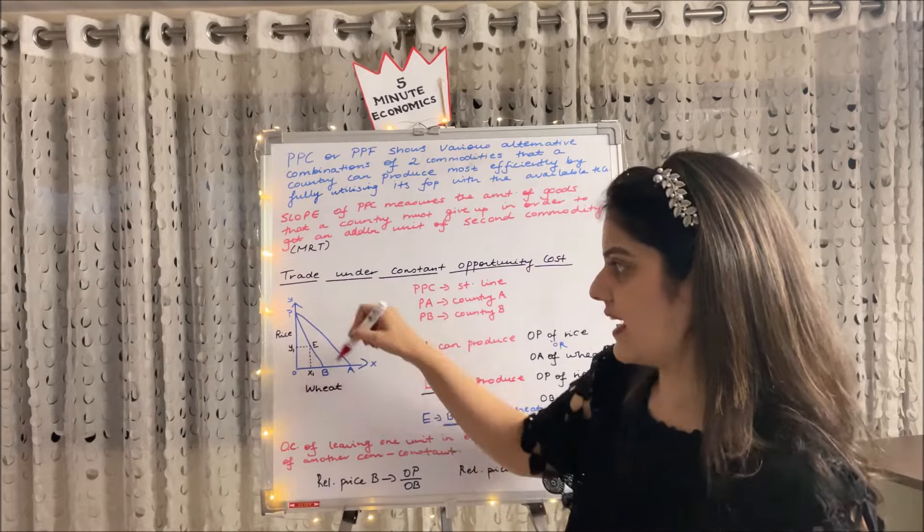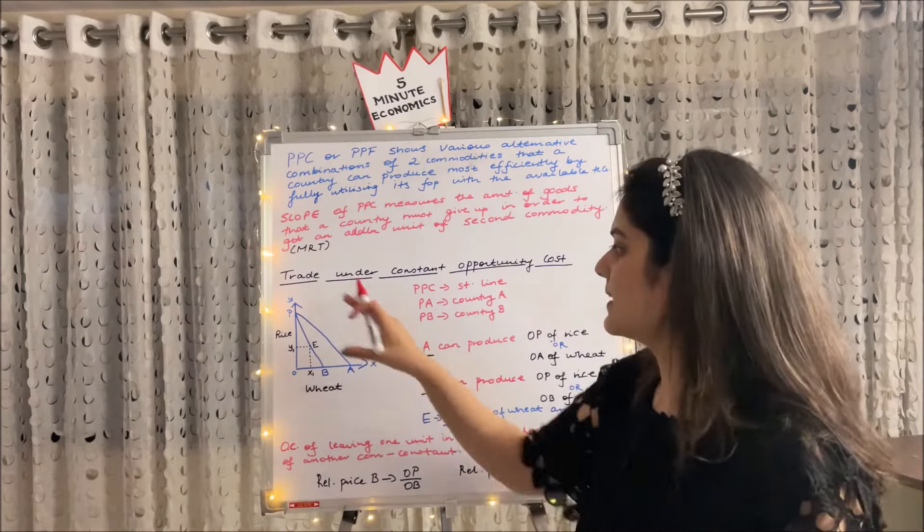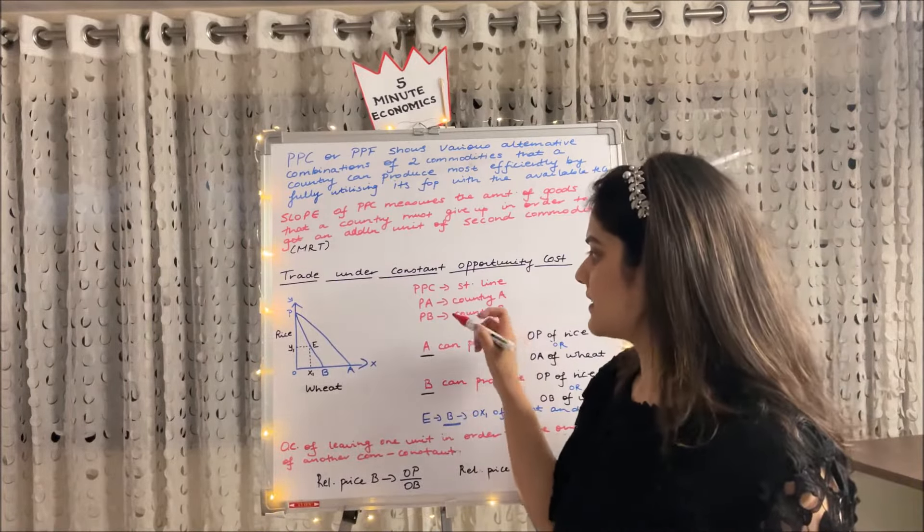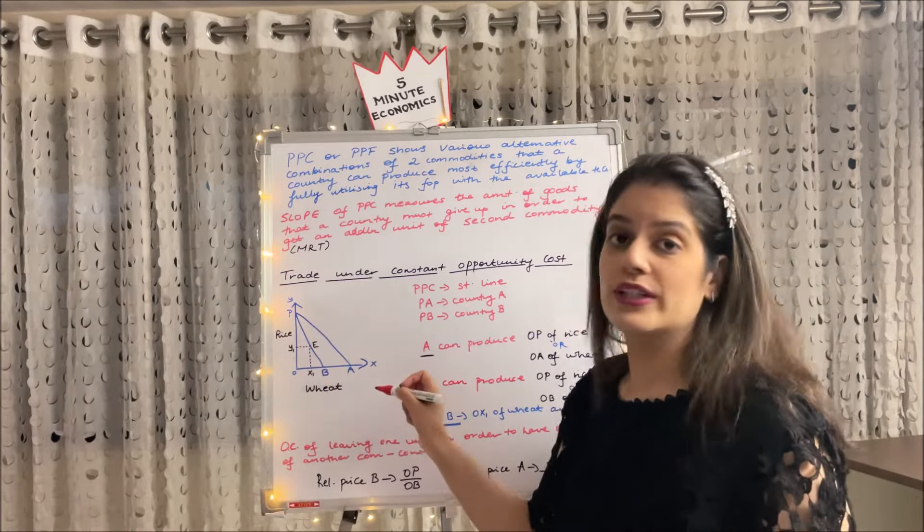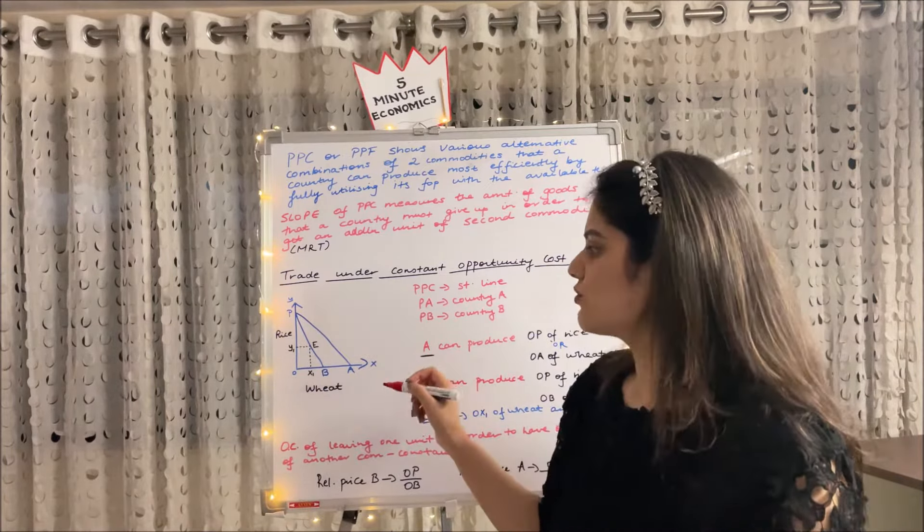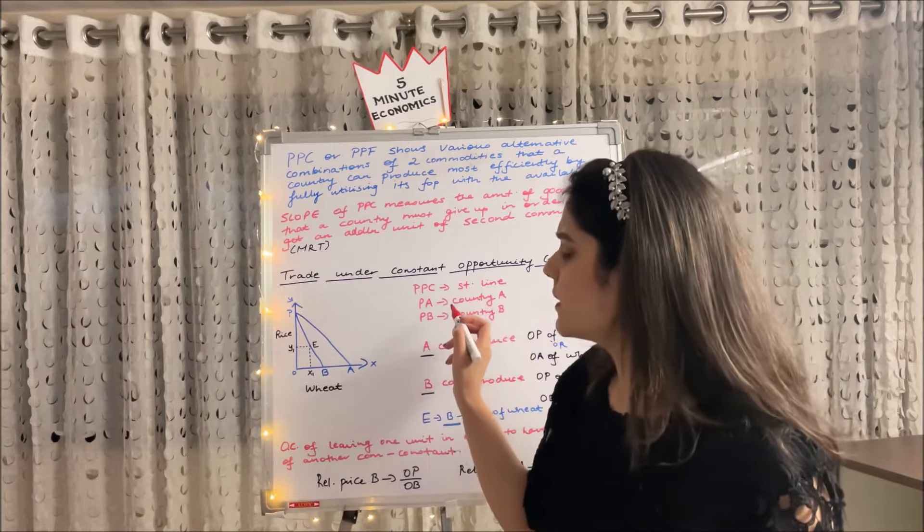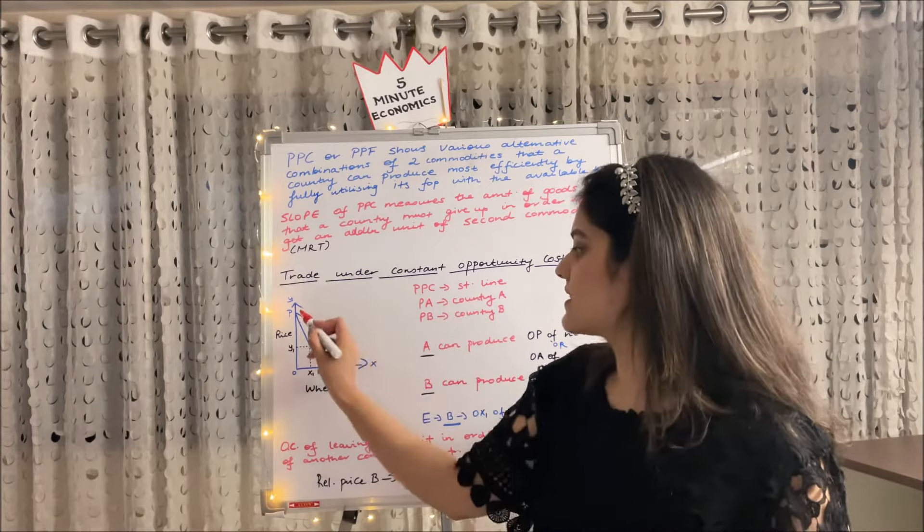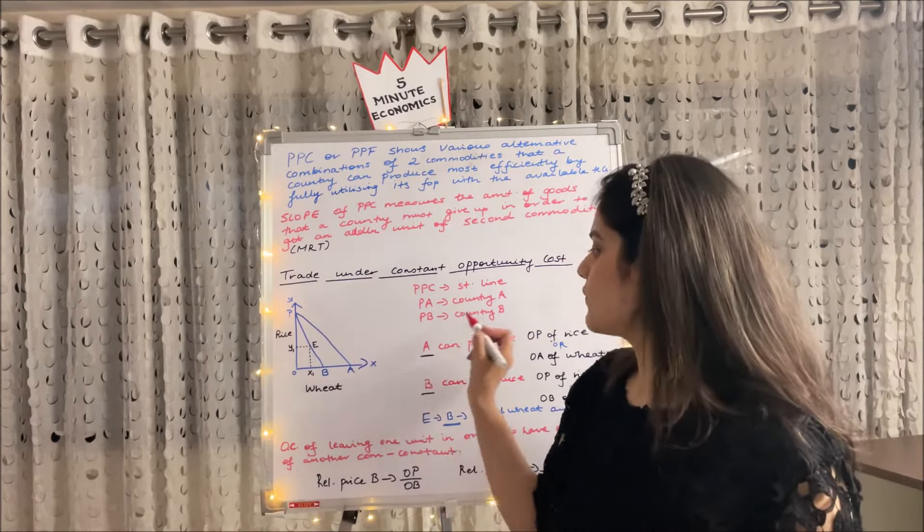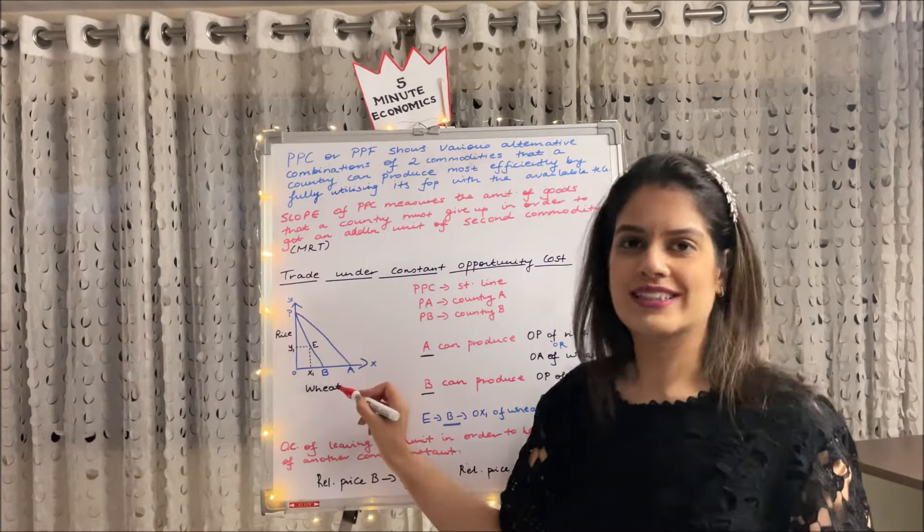You can see it's a straight line. It's not a convex or concave curve, but a straight line. We see that we have taken two commodities, rice on the y-axis and wheat on the x-axis, and two countries A and B. The PPC of country A is PA, whereas the PPC of country B is PB. I hope you can see that.